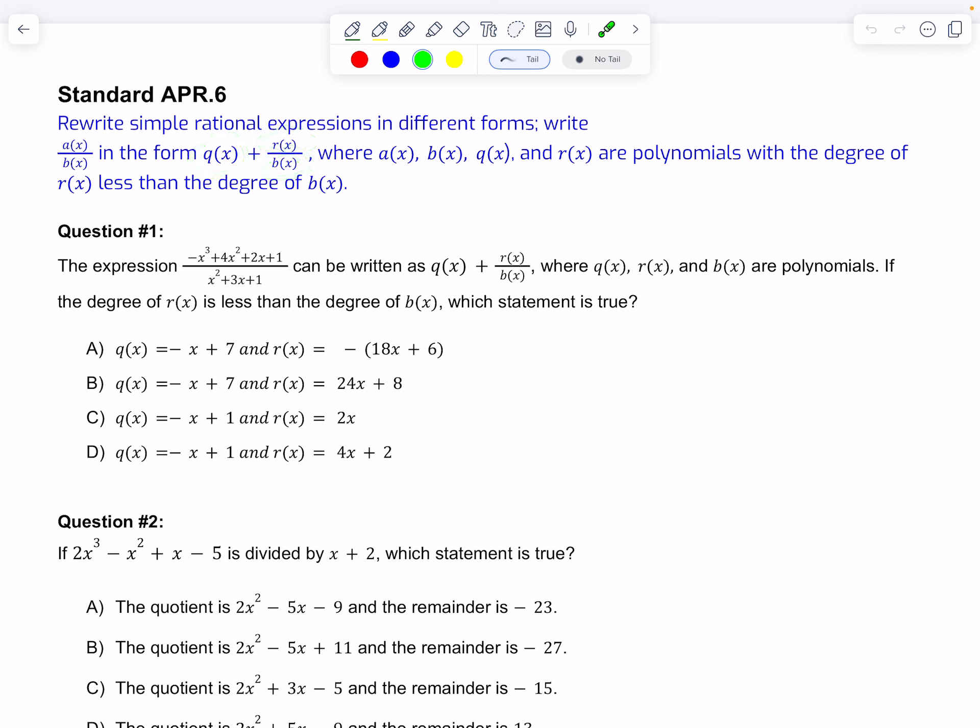Let's look at question number one. The expression can be written as Q(x) plus R(x) over B(x), and they gave us negative x cubed plus 4x squared plus 2x plus 1 over x squared plus 3x plus 1.